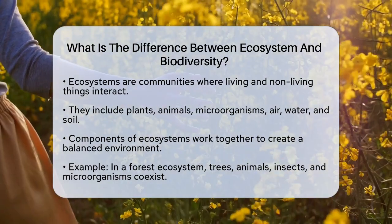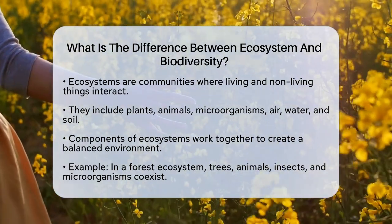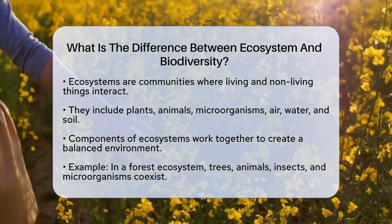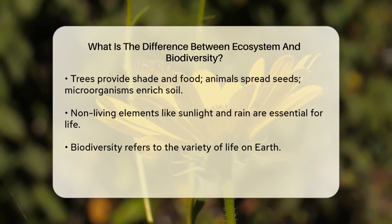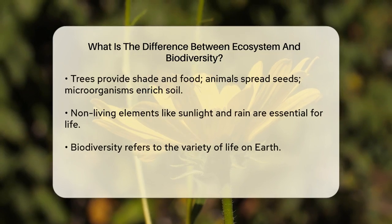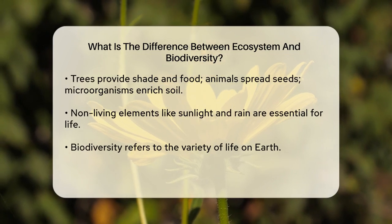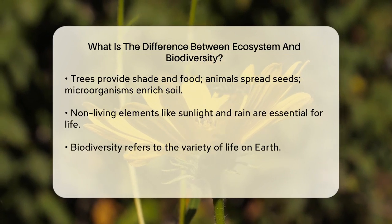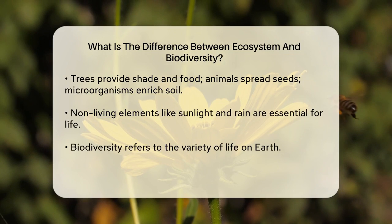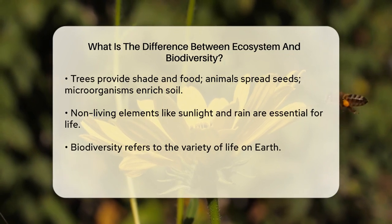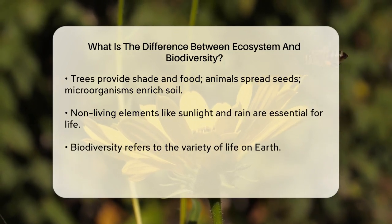For example, in a forest ecosystem, you have trees, animals, insects, and microorganisms all living together. The trees provide shade and food, animals help spread seeds, and microorganisms break down dead plants to create nutrient-rich soil. The nonliving parts, like sunlight and rain, are just as important because they support the growth and survival of all the living organisms.